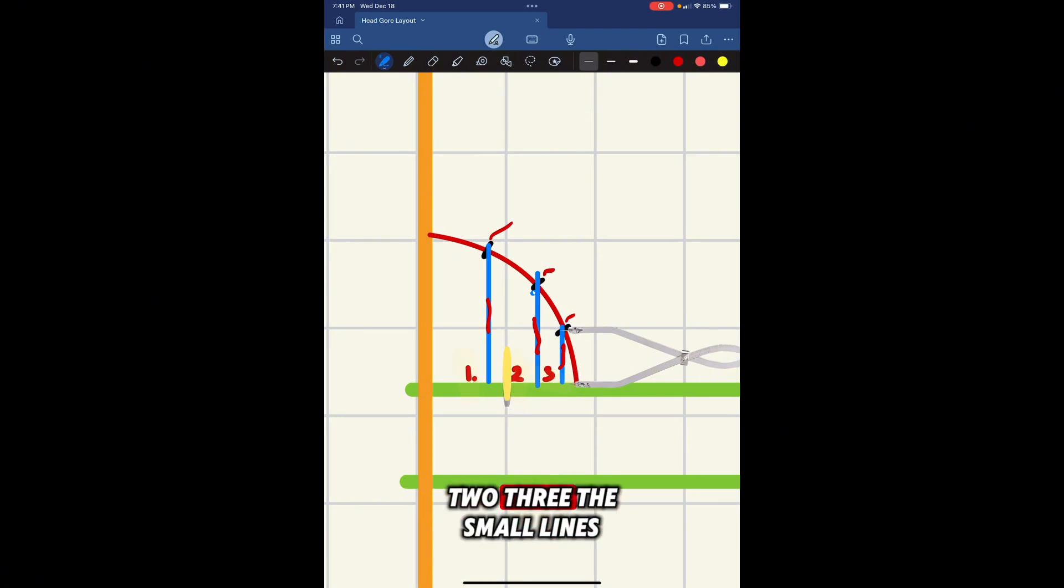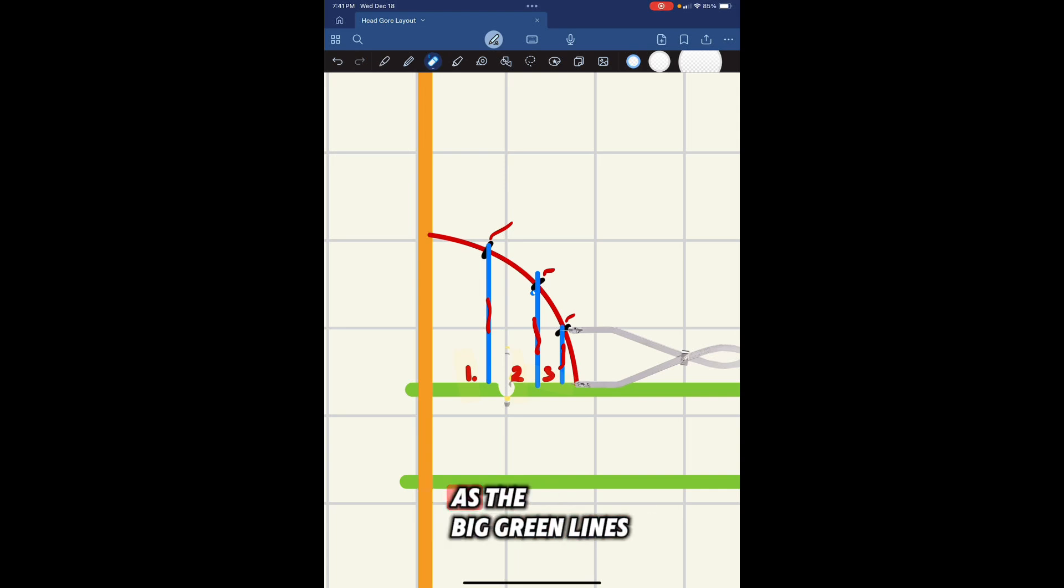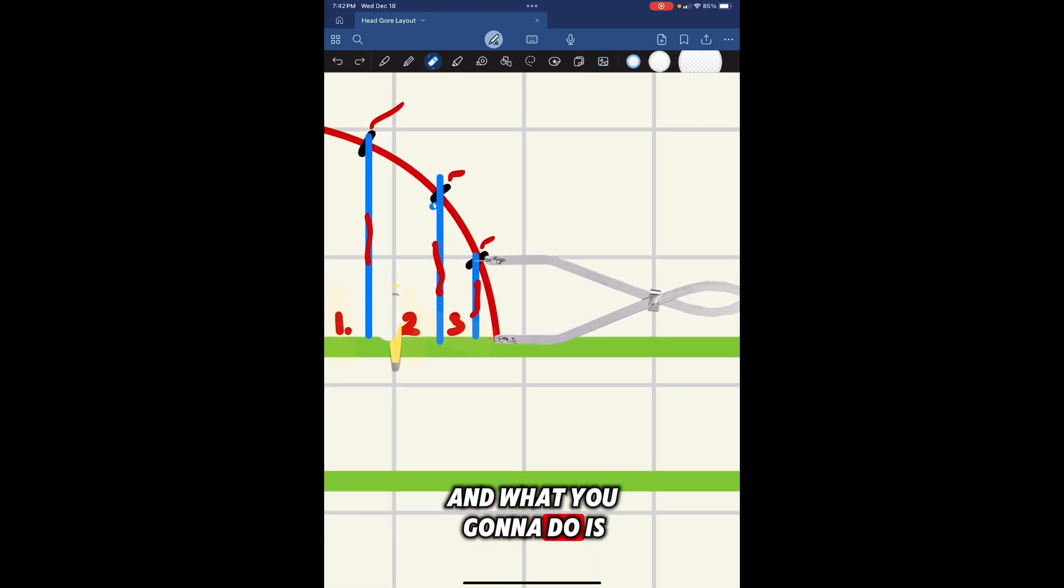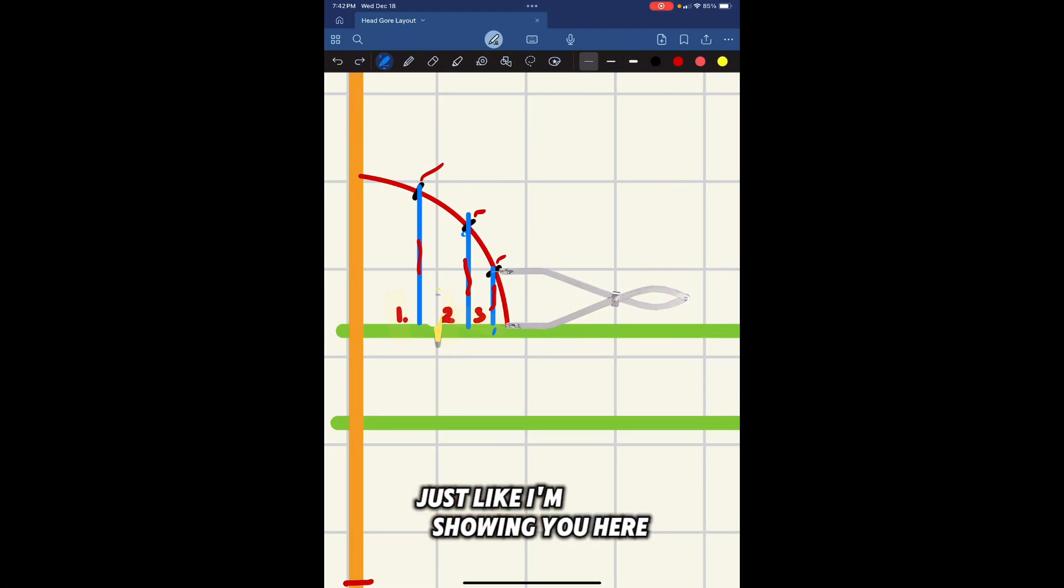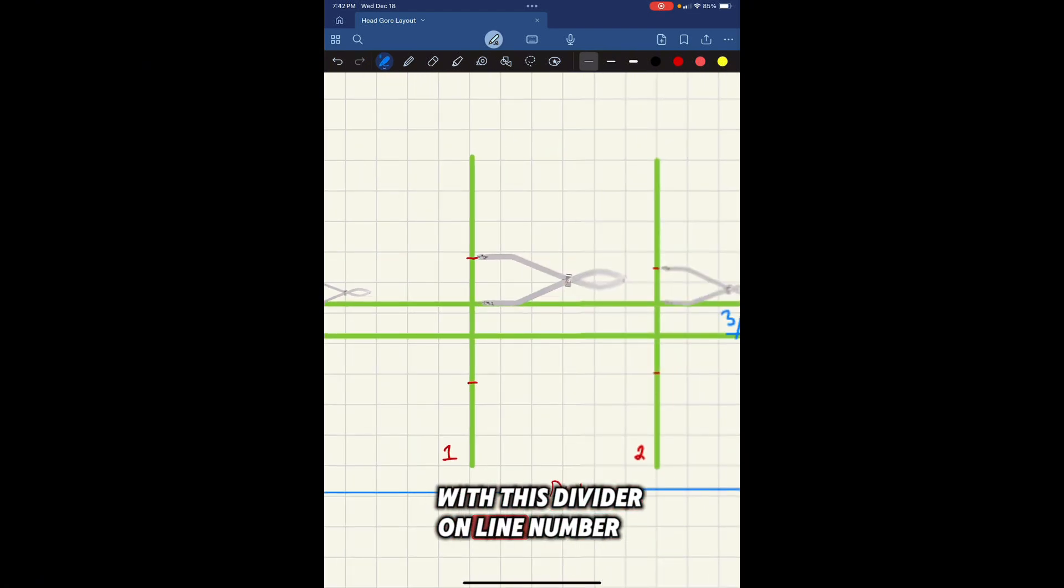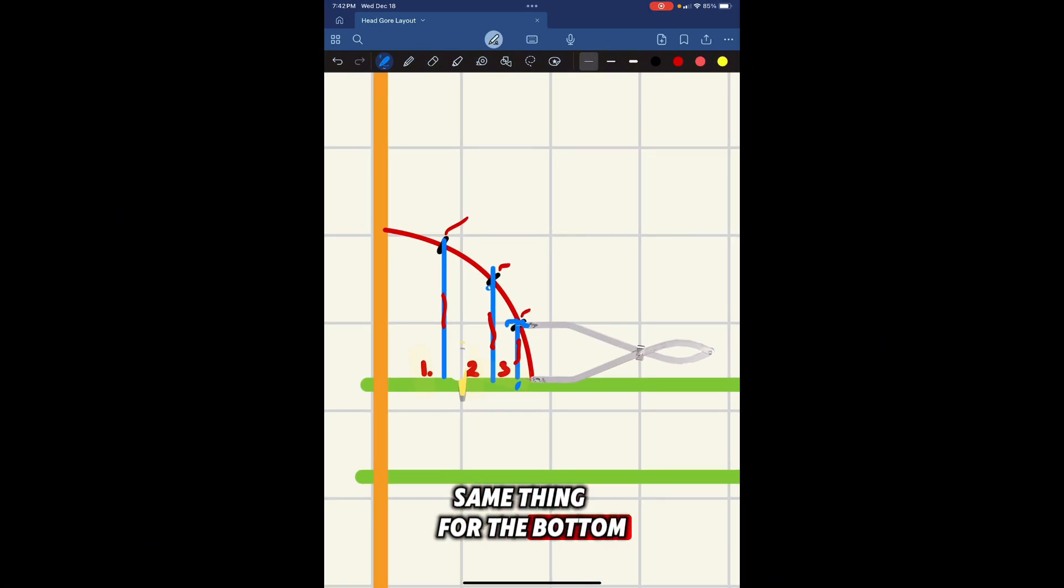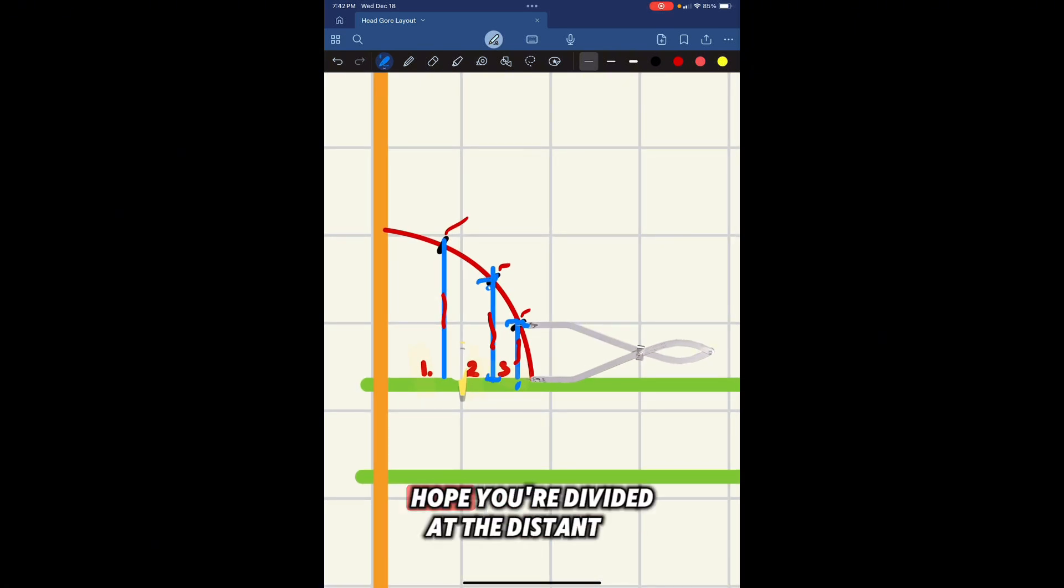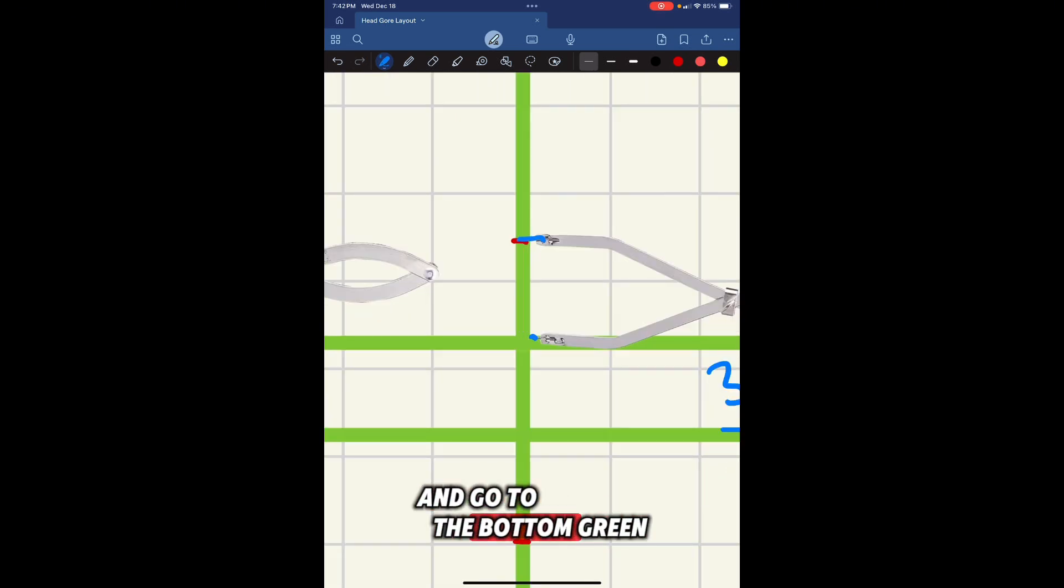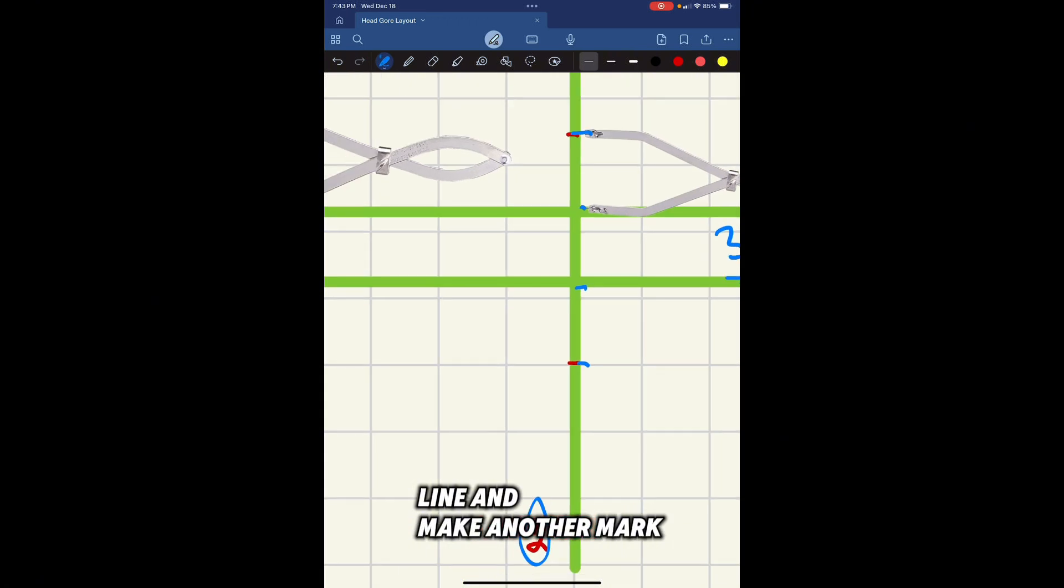One, two, three. The small blue lines are going to be numbered as the big green lines. And what you're going to do is open your divider, just like I'm showing you here with this divider on line number three. You're going to go to line number three and put that same distance on the top line, make a mark, and do the same thing for the bottom and make a mark. Repeat the same process for line number two. Open your divider at the distance on line number two, go to the top green line, make a mark, and go to the bottom green line and make another mark.